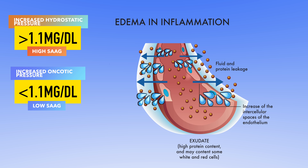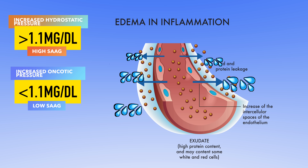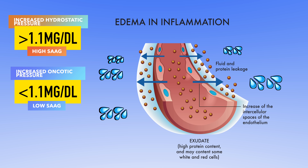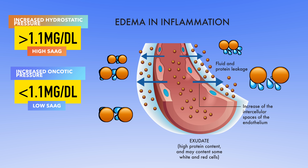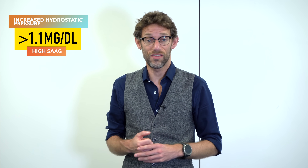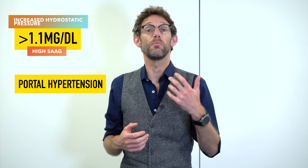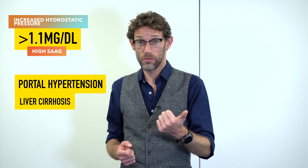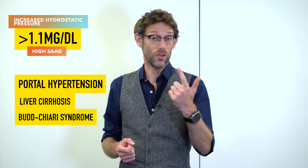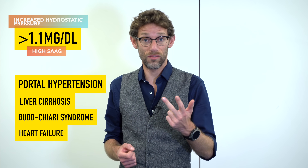Conversely, if we have a low SAAG then we're looking at an increased oncotic pressure, and this is much more serious. This means that for some reason the bowel and membranes around it have become more permeable and have allowed albumin as well as fluid to pass into the peritoneal cavity. A high SAAG from our ascites will be due to, for example, increased portal hypertension — so that might be liver cirrhosis, it may be due to Budd-Chiari syndrome, and it can also be due to heart failure.